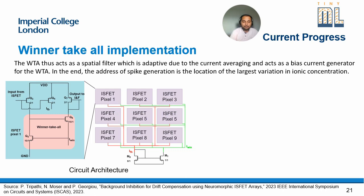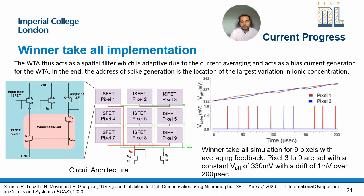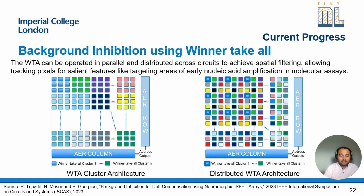The address of spike generation will be the location of the largest variation in ionic concentration, along with an averaged-out value of the entire cluster. In the winner-take-all simulation with 9 pixels, pixels 3 and 9 are set to a constant voltage of 330 millivolts, while pixels 1 and 2 are changed — when pixel 1 wins it spikes, then pixel 2 spikes, and so on. For the cluster-based approach, you can either cluster winner-take-all structures together where similar colors form the same cluster, or divide them across different chip locations, so areas requiring more resources fire more frequently by competing against other locations.